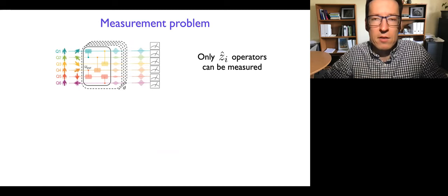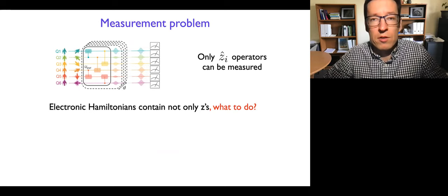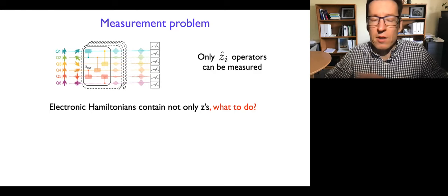To recap what the measurement problem is: quantum computers these days can measure Z operators for individual qubits, but they cannot measure more complicated operators unless they are linear combinations of products of Z operators for individual qubits. The electronic Hamiltonian unfortunately is one of those more complicated operators — it contains X's, Y's, and Z's as a linear combination of Pauli products. So how do we measure the expectation value needed in the variational quantum eigensolver?